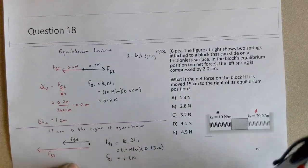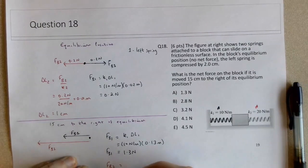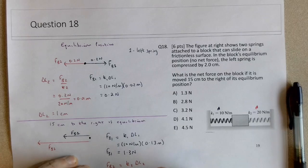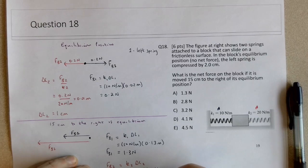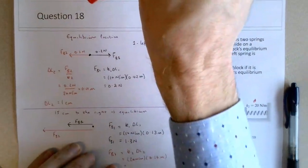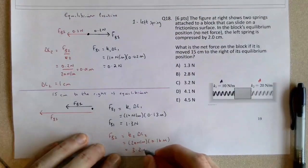So Fb2 will be equal to K2 times deltaL2. So this is going to be 20 newtons per meter times the 0.16 meters. That gives a force of 3.2 newtons.